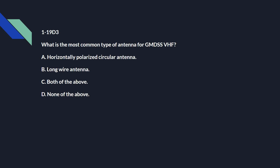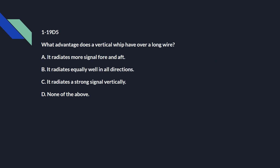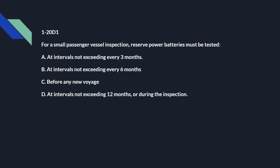1-19 Delta 3: What is the most common type of antenna for GMDSS VHF? D: none of the above. 1-19 Delta 4: What is the purpose of the antenna tuner? A: it alters the electrical characteristics of the antenna to match the frequency in use. 1-19 Delta 5: What advantage does a vertical whip have over a long wire? B: it radiates equally well in all directions. 1-19 Delta 6: A vertical whip antenna has a radiation pattern best described by C: a circle.